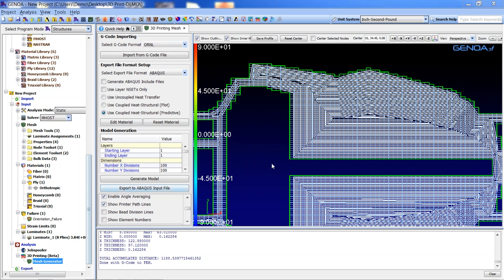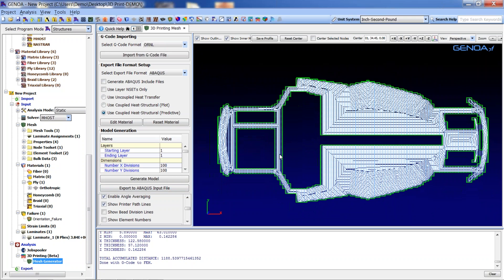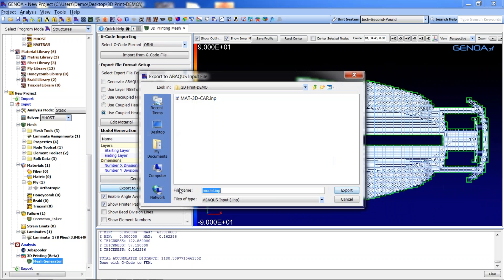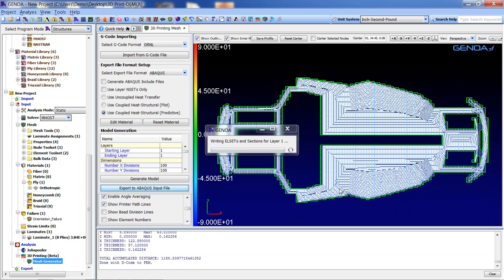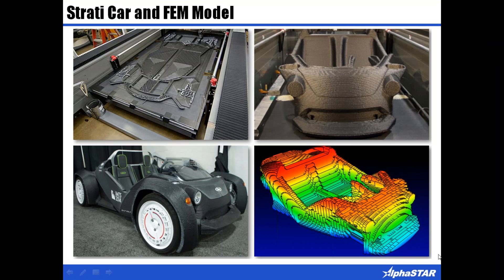Our final step is to generate the Abaqus input file, which is ready to be submitted for simulation. Once completed, the input file is ready for a fully coupled thermal-structural additive manufacturing simulation analysis. Additive manufacturing is a revolutionary science — simulation of the additive manufacturing process represents a mechanism to evaluate and optimize results before committing material resources to the actual task. Clearly, material and process parameters will have a significant impact on the final as-built product. Genoa 3D is ready to simplify the process and deliver desired results.